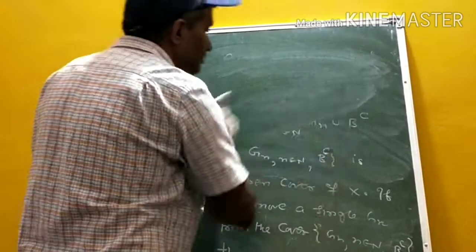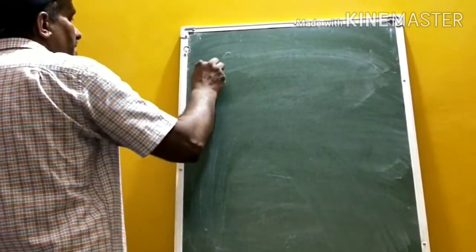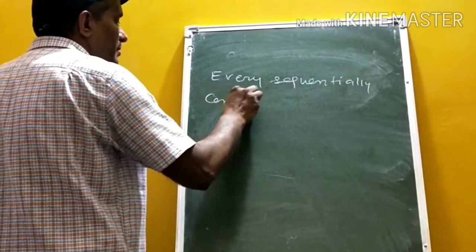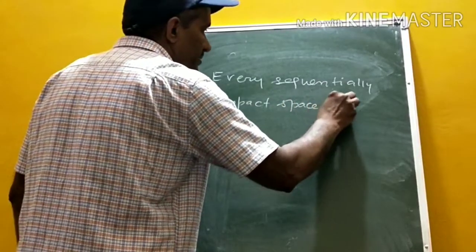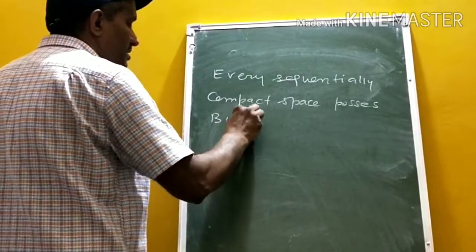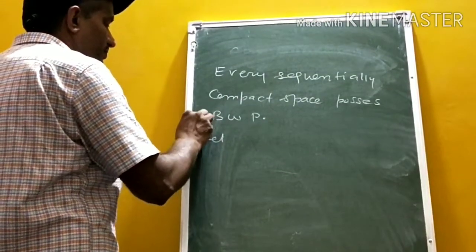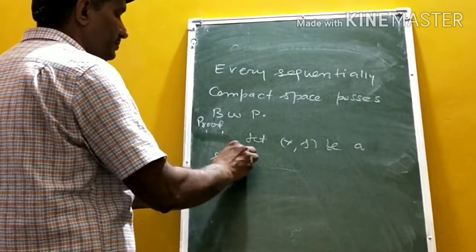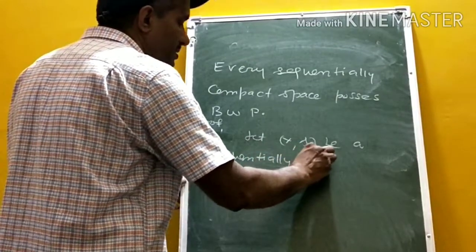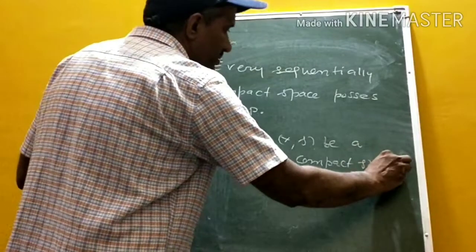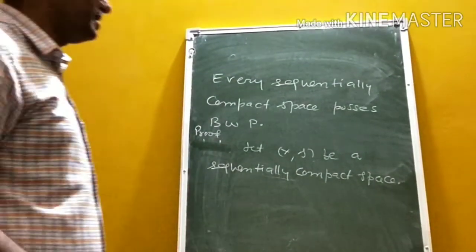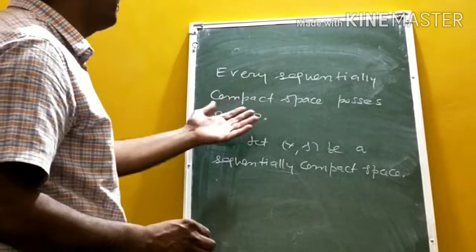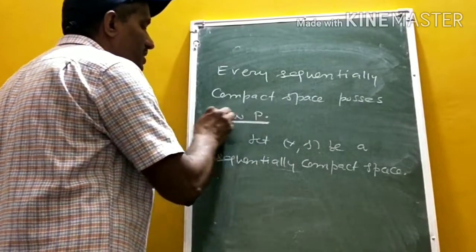Next theorem: every sequentially compact space possesses Bolzano's property. Let X be a sequentially compact space — meaning every sequence has a convergent subsequence. We have to show that every sequentially compact space possesses Bolzano's property.